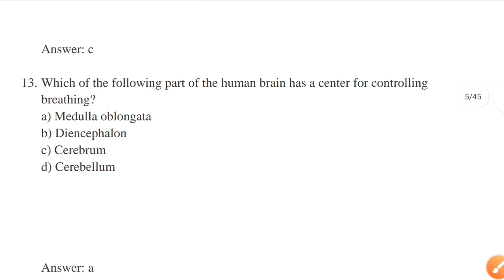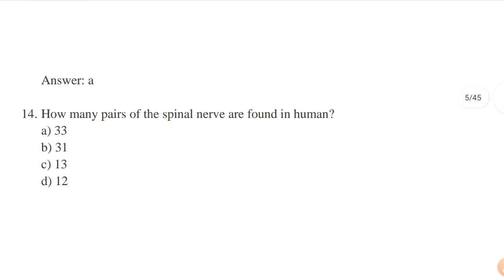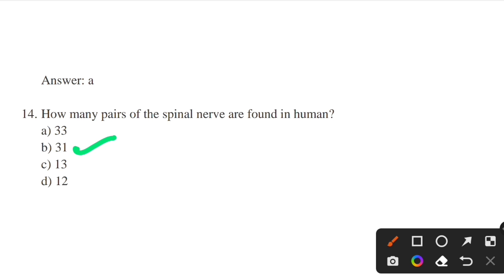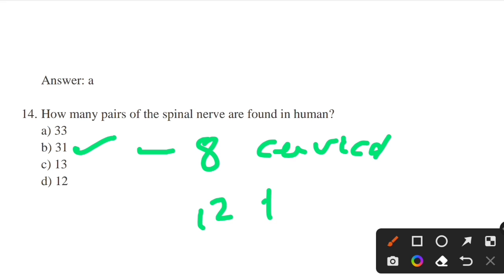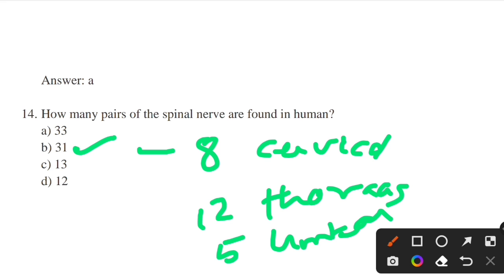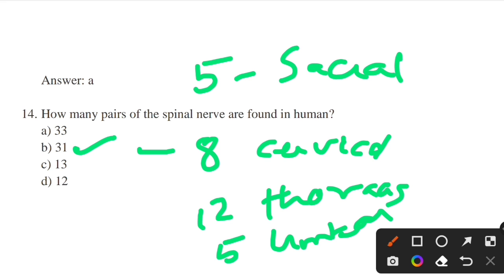How many pairs of spinal nerves are found in humans? Options: 33, 31, 13, 12. Answer: option B — 31. There are 31 pairs of spinal nerves in humans. They are: 8 cervical, 12 thoracic, 5 lumbar, 5 sacral, and 1 coccygeal. Each part of the spinal cord connects with a specific region of the body.